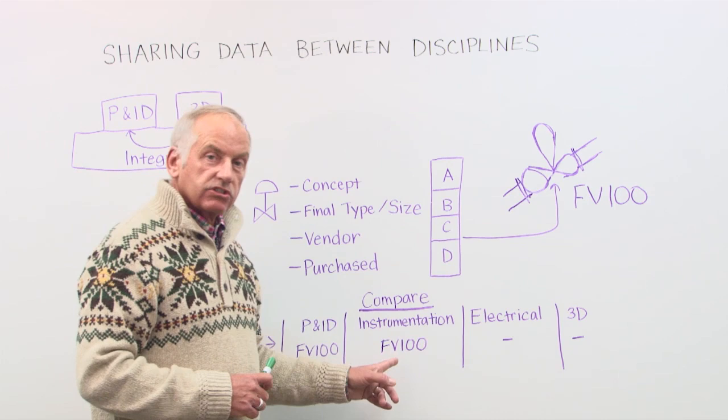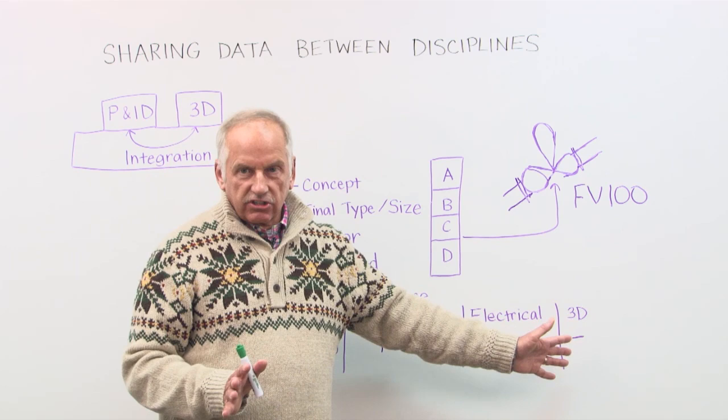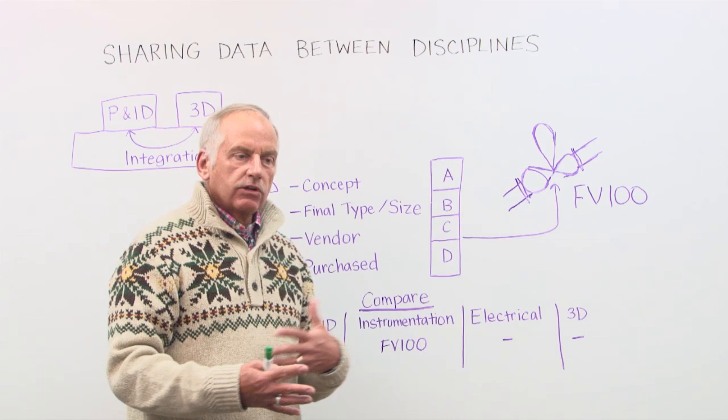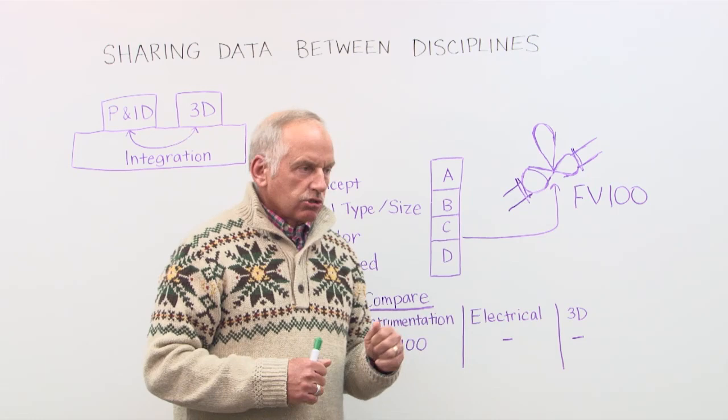You see that the valve is known by the P&ID. The valve is known by the instrumentation—he has worked on it. But electrical and 3D has not touched it yet. So that also gives you a status of who actually used the data and who is still waiting on maybe more final information to create it.